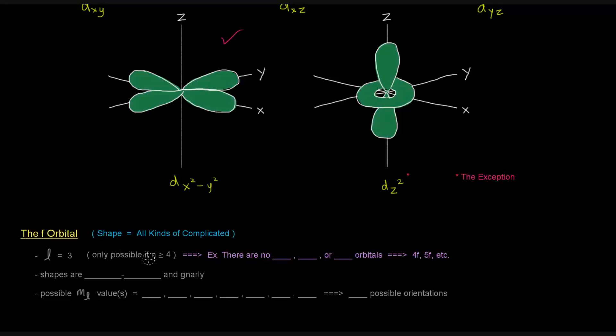It's only possible if the n value is greater than or equal to 4. So there are no 1f, 2f, or 3f orbitals. There's only 4f, 5f, and so forth.